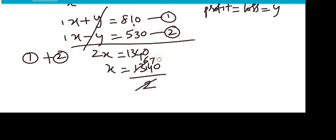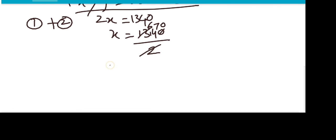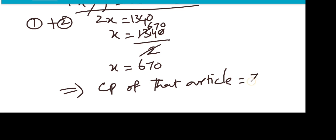So x equals 670. That implies the cost price of that article is rupees 670. That's all.